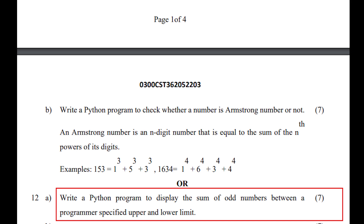That is, a lower limit and an upper limit — for example, lower limit 5 and upper limit 105, including both numbers. You have to pick the odd numbers between these limits and calculate their sum, then display both the odd numbers and the total sum.